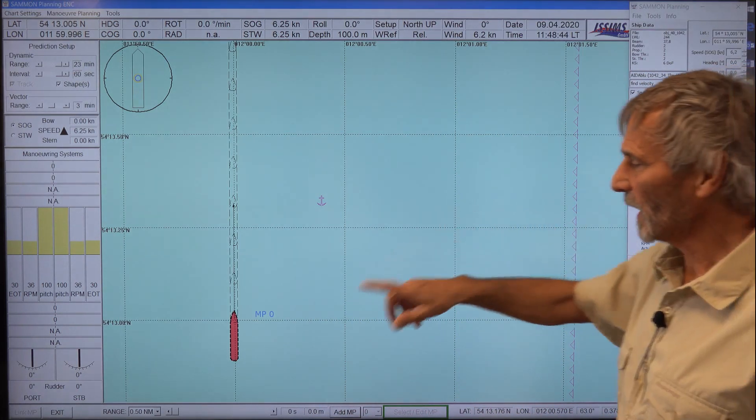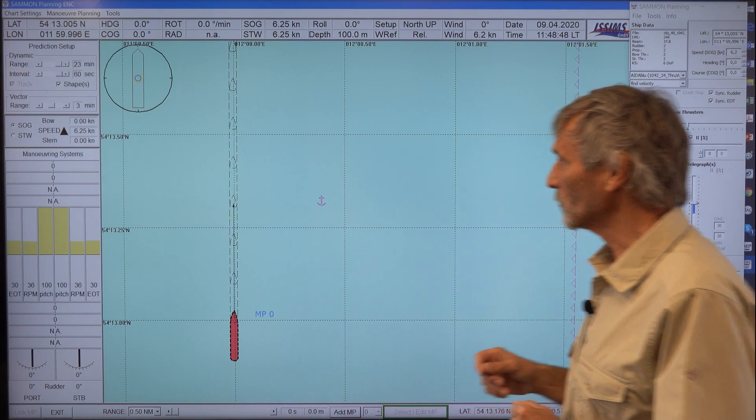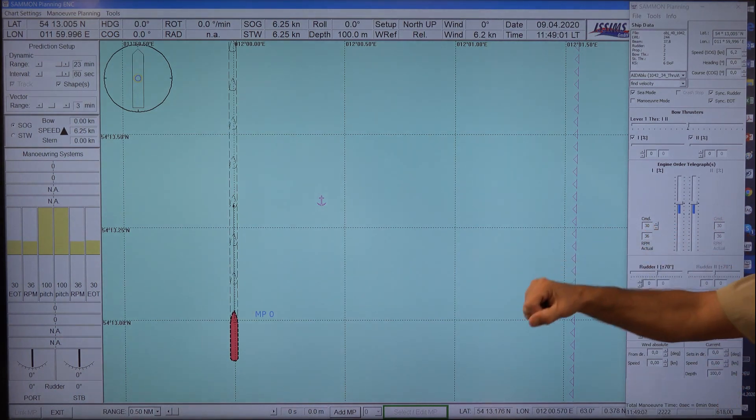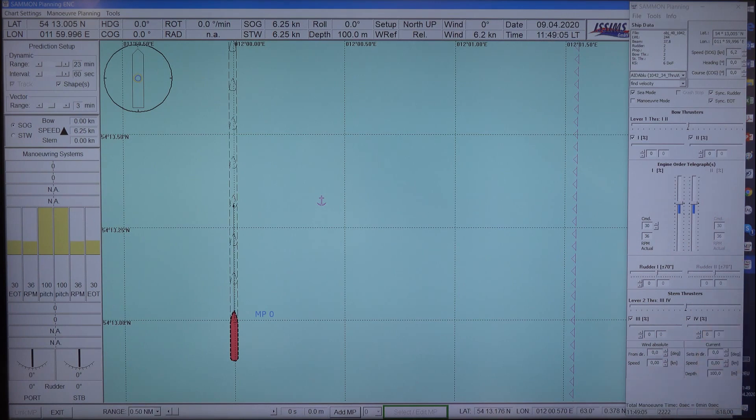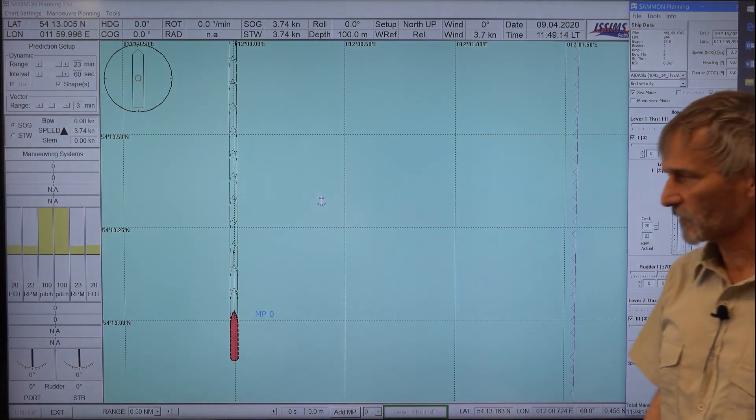So for the time being we have positioned the ship here and it's a cruise ship again with two engines, bow thrusters, stern thrusters, two rudders. And for the time being it's going ahead with 30% of engine order settings which results in 6.2 knots. Maybe we reduce it a little bit, this is 20, so now it's going with 3.7 knots.